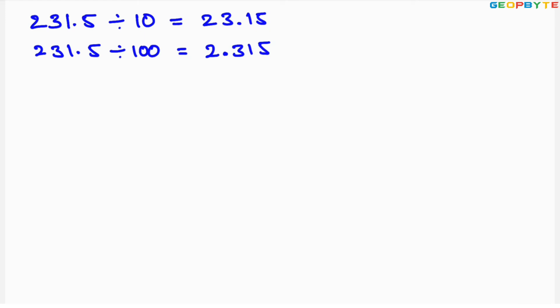Previously the decimal point was after 1; now shifted left by two positions it is placed after 2, giving 2.315. Next, 231.5 divided by 1000 — shifting the decimal point left by three positions gives 0.2315. So the result of 231.5 divided by 1000 is 0.2315.